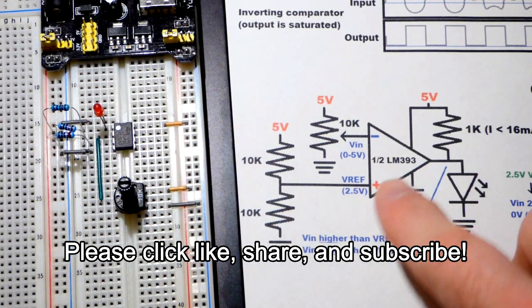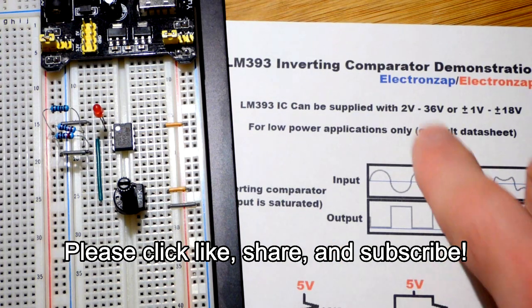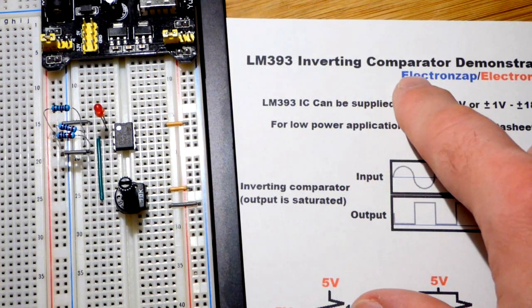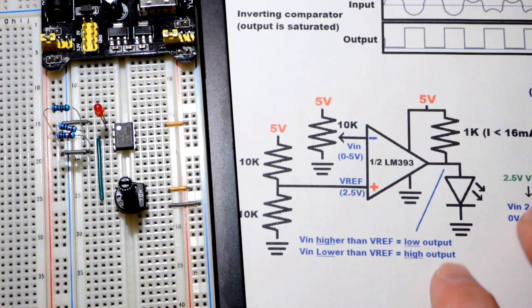In this video we're going to look at using the LM393 integrated circuit. It's a comparator. We're going to wire it up so that it's an inverting comparator, taking the voltage of these two inputs.